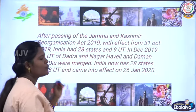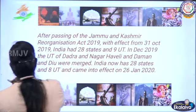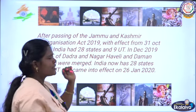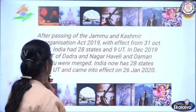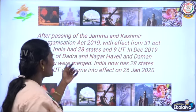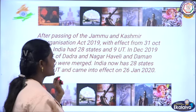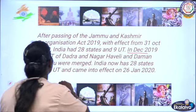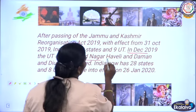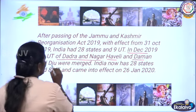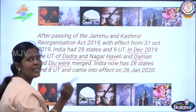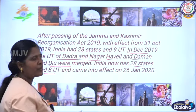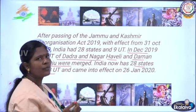After the passage of the Jammu and Kashmir Reorganization Act 2019, with effect from 31st October 2019, India had 28 states and 9 union territories. In December 2019, the union territories of Dadra and Nagar Haveli and Daman and Diu were merged, making it 28 states and 8 union territories, which came into effect on 26th January 2020.